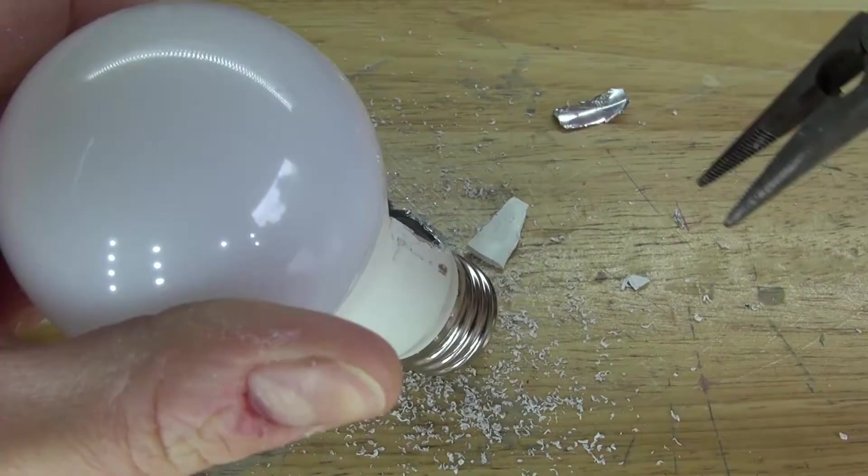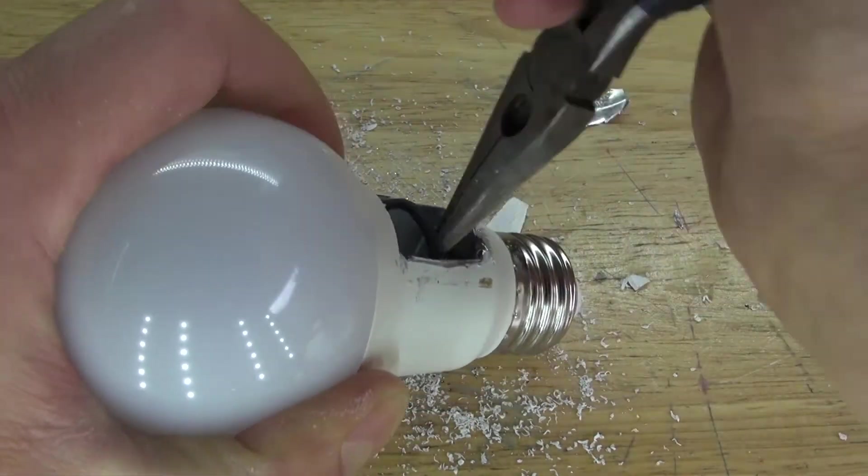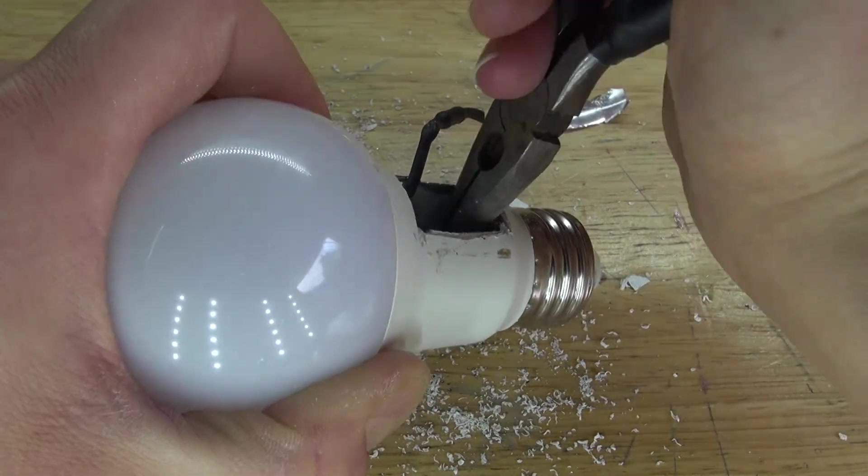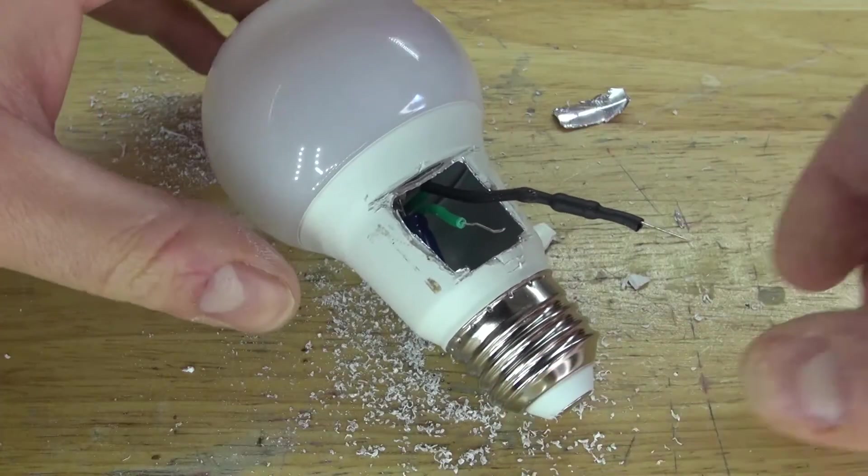Next take the needle nose pliers and pull out the live wire and there it should look just like this.